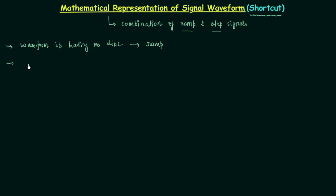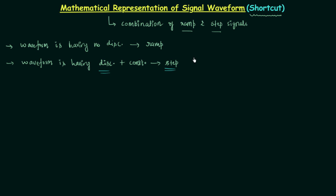When the waveform has discontinuities as well as some constant values, it can be represented using only step signals. One more important point: the number of step signals used is equal to the number of discontinuities in the signal waveform.